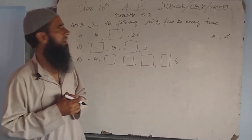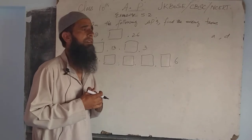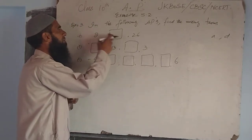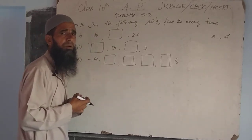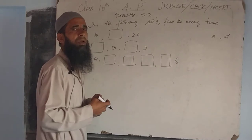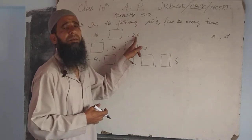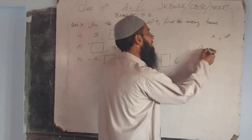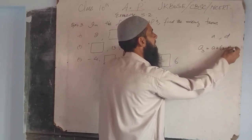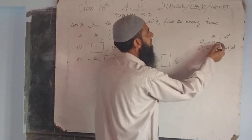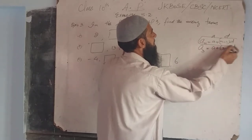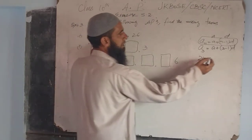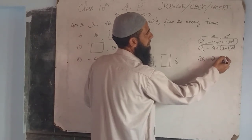We have the first term A but we do not have the value of the common difference D. Consecutive terms — the second term — are not available. We take the third term as A3. A3 is equal to A plus (3 minus 1) into D, using the formula An = A + (N-1)D. The third term A3 is 26, and A is 2, so: 26 = 2 + 2D.